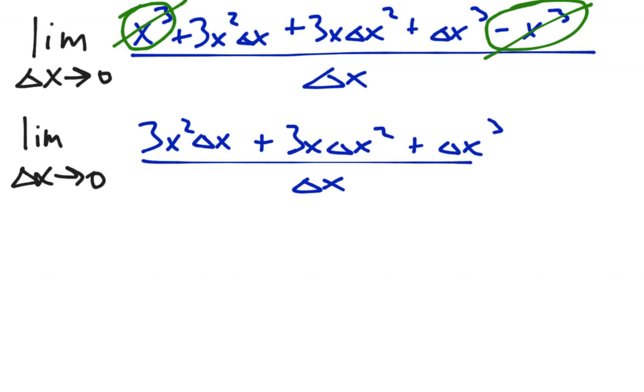And we're left with this. X cubes go away. We're left with this second line. And now notice, you have a delta x in every term, at least one of them. And now this is a common error. Yes, you can cancel this out as long as you have a delta x in every term. And you do.